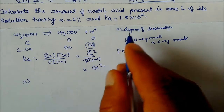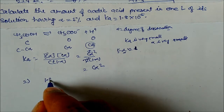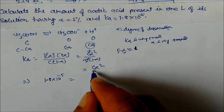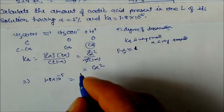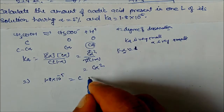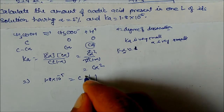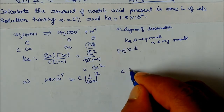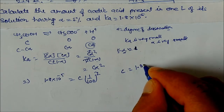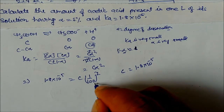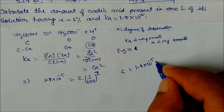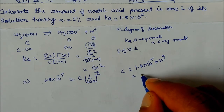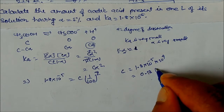Putting in the value of the dissociation constant Ka = 1.8×10⁻⁵ and concentration C·α² where alpha is 1/100 squared equals 10⁻⁴. So concentration C = 1.8×10⁻⁵ divided by 10⁻⁴, giving C = 0.18 molarity — wait, working through: Ka = C·(1/100)², so C = 1.8×10⁻⁵ × 10⁴ = 0.18 molarity... which gives approximately 0.1 molarity.